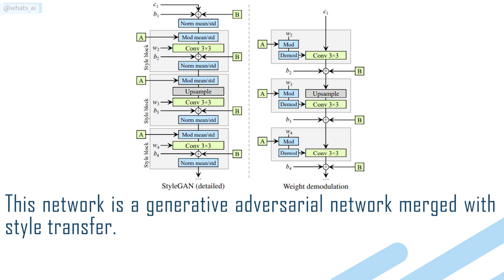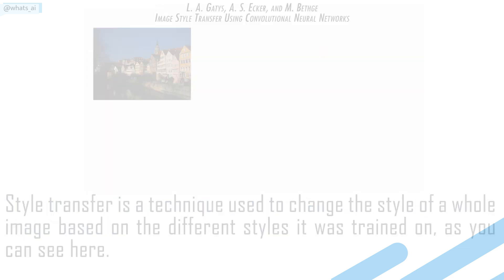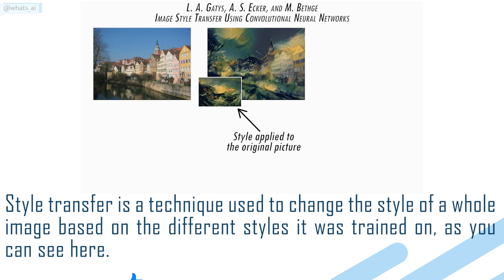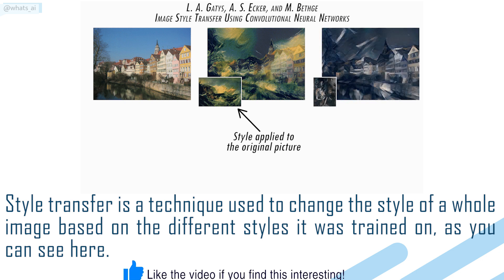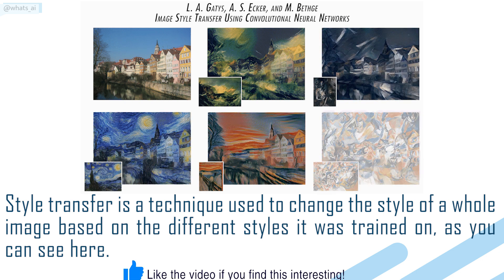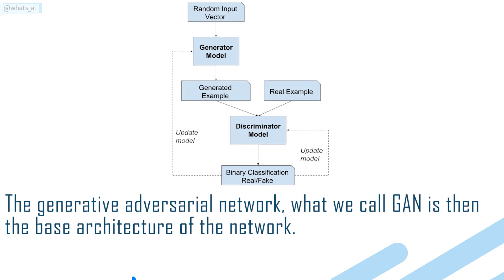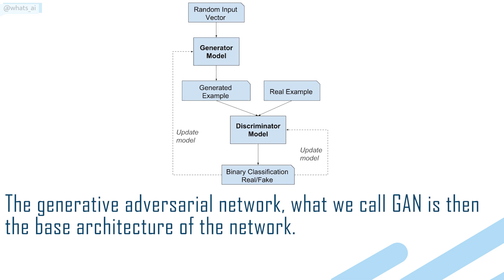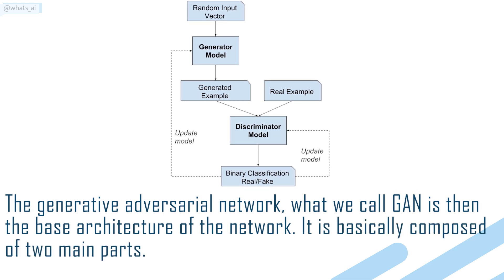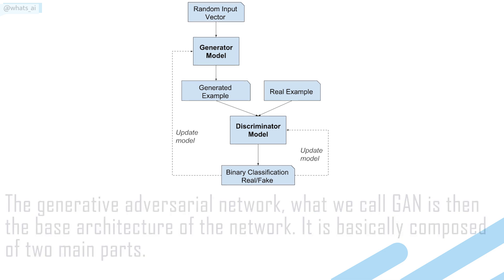This network is a generative adversarial network merged with StyleTransfer. StyleTransfer is a technique used to change the style of a whole image based on the different styles it was trained on, as you can see here. The generative adversarial network — what we call a GAN — is then the base architecture of the network, basically composed of two main parts.